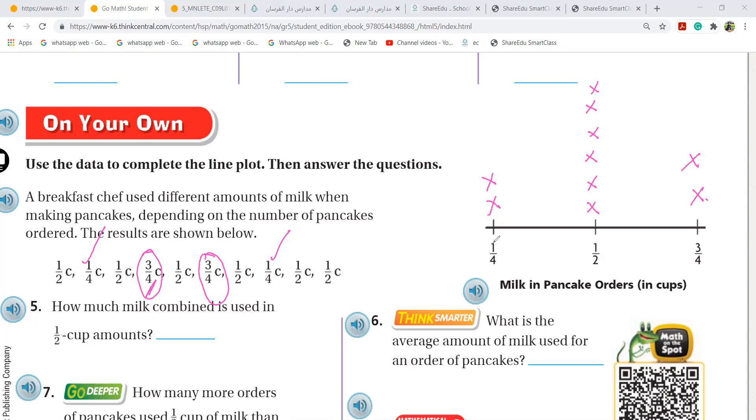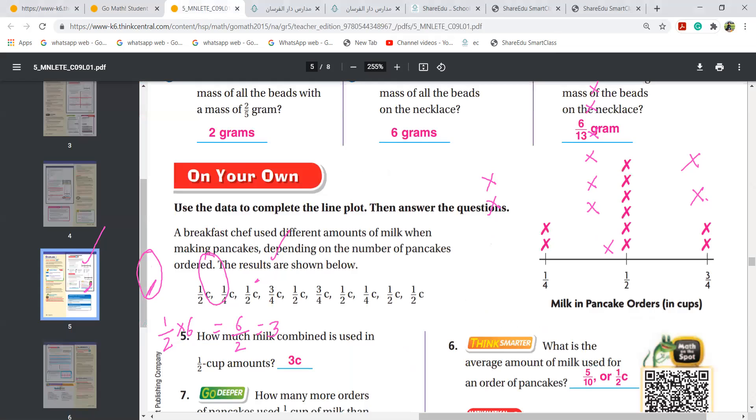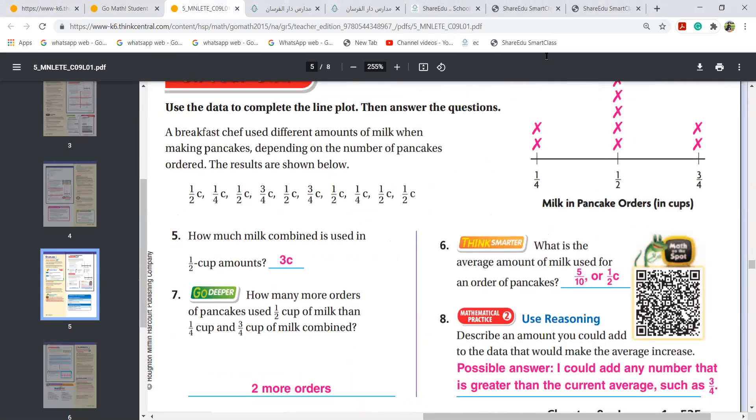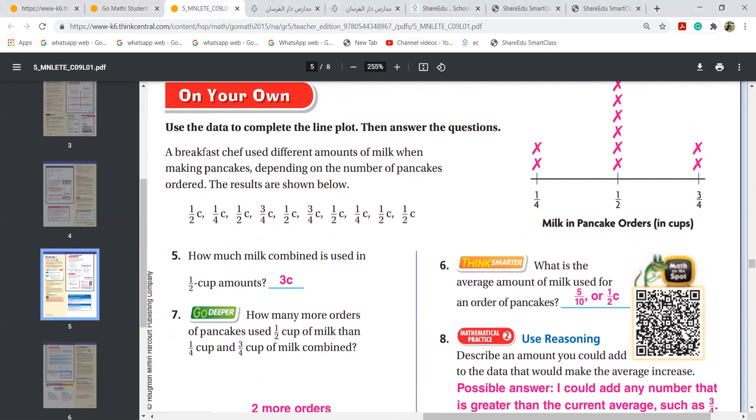Did you get it? Like, first I counted how many 1 fourths are there? 1 and 2. How many halves are there? 1, 2, 3, 4, 5, 6. I put 6 crosses. Then how many 3 fourths are there? There are 2, so I put 2 crosses. So how much milk combined in using half cup? So half multiply by? In half, how many were there? 1, 2, 3, 4, 5, 6. I'll do half multiply by 6. So it'll be 6 over 2, that is 3. My answer is 3 here. Understood? Yes. My answer is 3 cups. Just write 5 over 10 or half here.